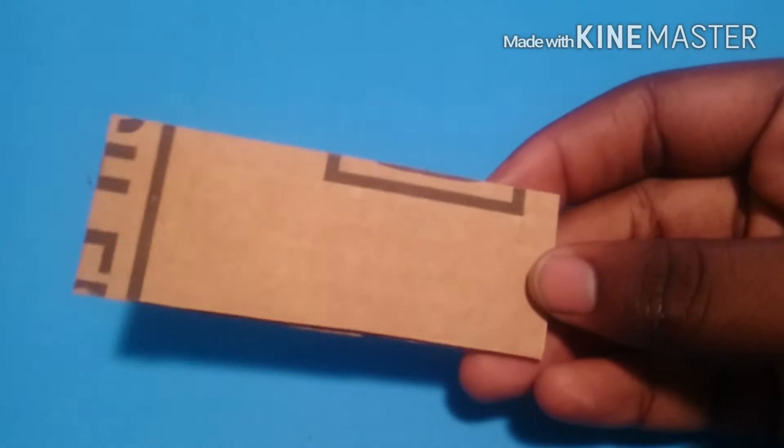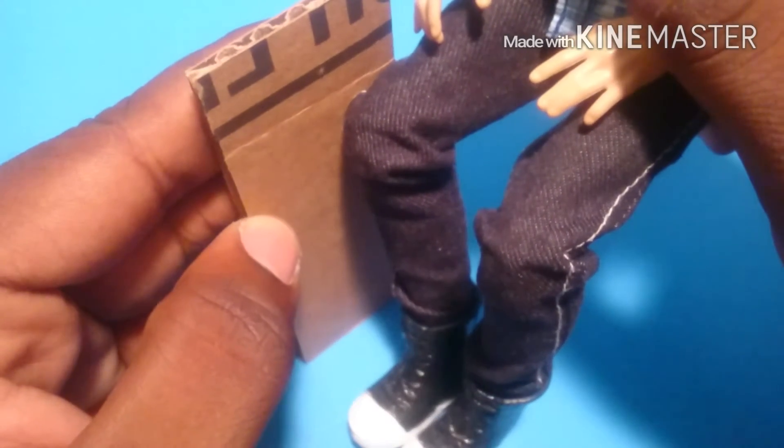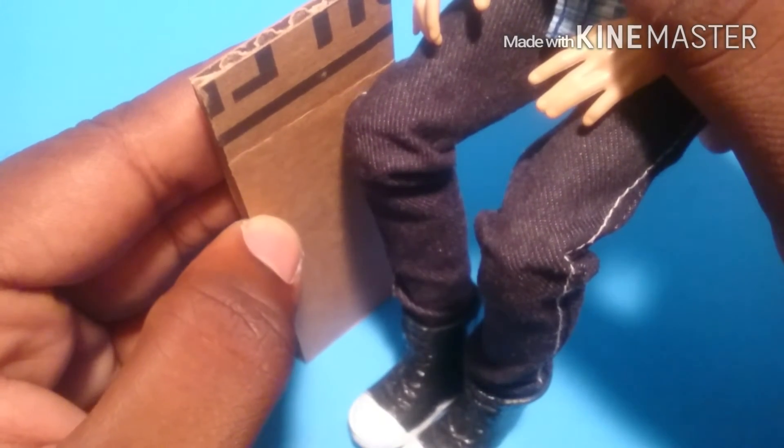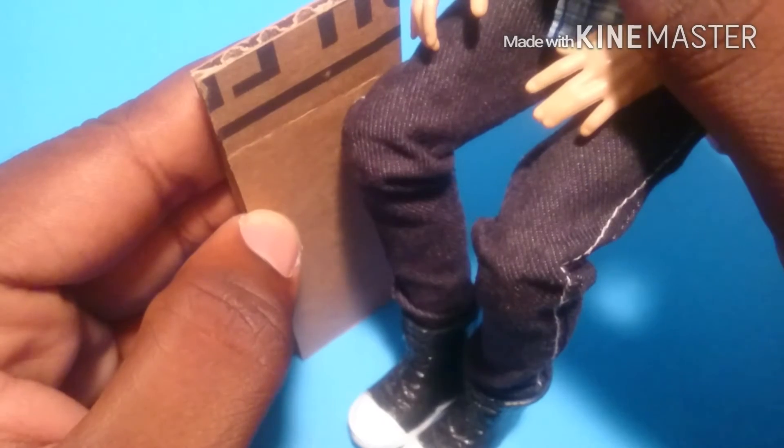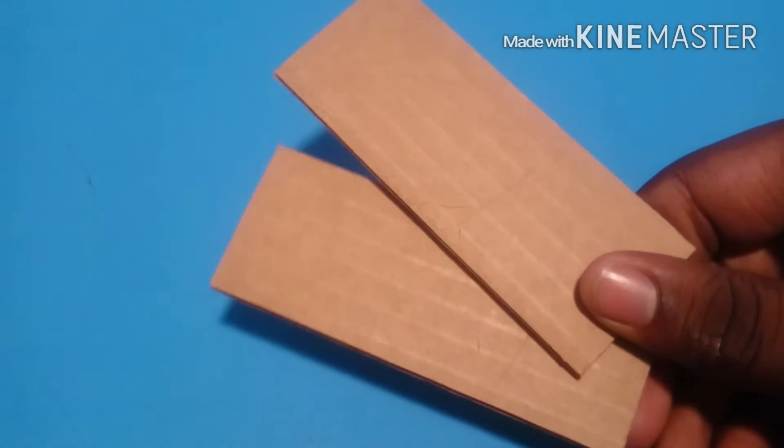I'm going to start by cutting a rectangle of cardboard, so when the doll is seated, it passes the doll's lap just a little bit. And I repeat to make two.